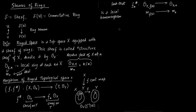Now let us talk about this morphism of ringed spaces in more tangible and understandable terms. You have a continuous map F between topological spaces X and Y. Take G, an element of O of Y — G is some function in the ring. Then G composed with F, i.e., G∘F, belongs to F★ of O of X.